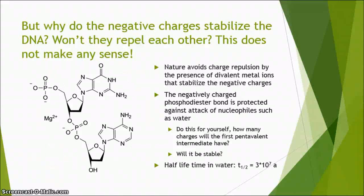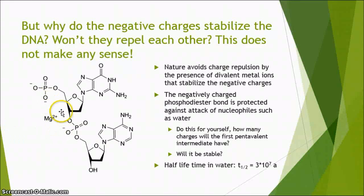Now we have confirmed the negatively charged backbone. But many negative charges on a molecule will repel each other and therefore destabilize it — isn't this a problem for DNA? Nature is very clever and has a way to resolve this seemingly paradoxical problem. Divalent metal ions like magnesium 2+ will align with the backbone and shield the negative charges from each other. But how does the negative charge actually stabilize the DNA?